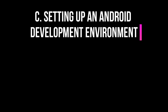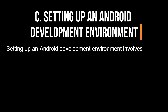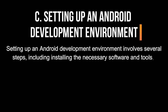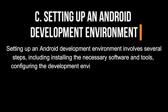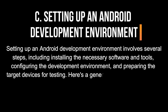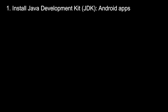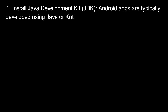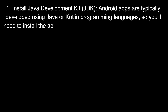Setting up an Android Development Environment involves several steps, including installing the necessary software and tools, configuring the development environment, and preparing the target devices for testing. Android apps are typically developed using Java or Kotlin, so you will need to install the appropriate version of the Java Development Kit (JDK) on your development machine.